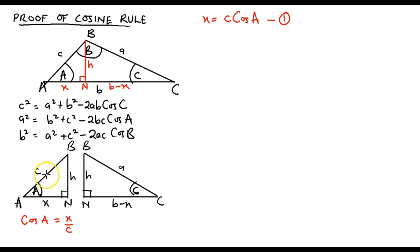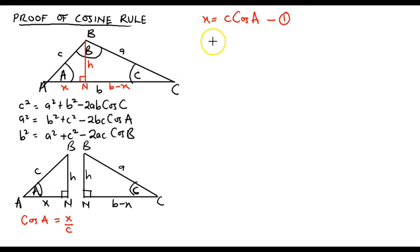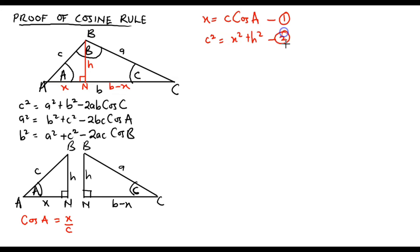From the same triangle ABN, we can also connect the three sides using Pythagoras' theorem. From Pythagoras' theorem, the hypotenuse squared — which is c squared — should be equal to x squared plus h squared. We can label that as equation 2. So from triangle ABN, we have generated two equations: equation 1 and equation 2.